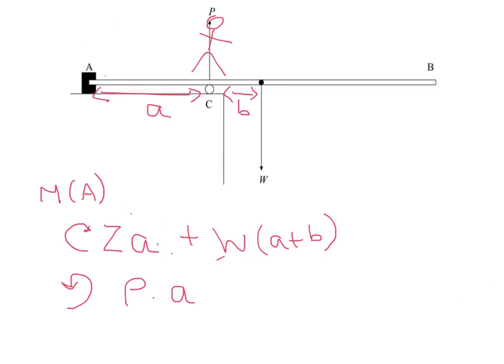So if this system is to remain in equilibrium, that must mean that this section here, the P multiplied by A, must get bigger to compensate for the fact that Z times A has been added onto the previous one.